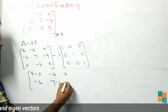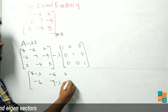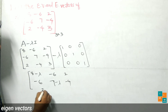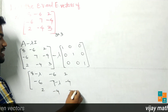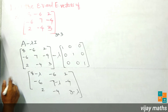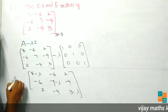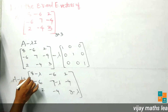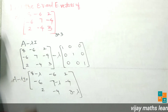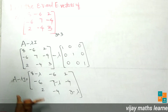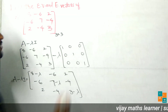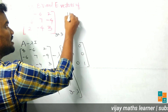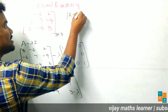After subtracting lambda I from A, the resulting matrix A minus lambda I has diagonal entries 8 minus lambda, 7 minus lambda, and 3 minus lambda, with off-diagonal entries unchanged: -6, 2, -6, -4, 2, -4. This is the square matrix A minus lambda I.